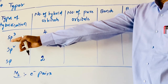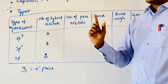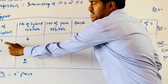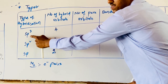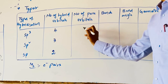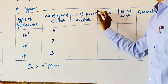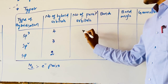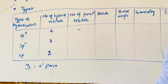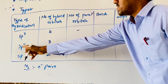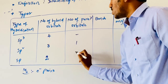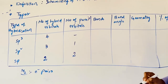The degenerate p orbitals are px, py, pz — total 3. In sp3, all 3 p-orbitals participate, so pure p-orbitals remaining = 0. In sp2, 3 minus 2 = 1 pure p-orbital remains. In sp, 3 minus 1 = 2 pure p-orbitals remain.